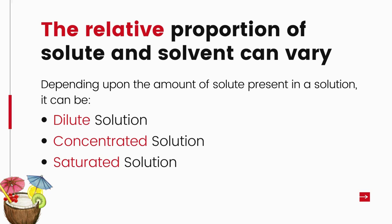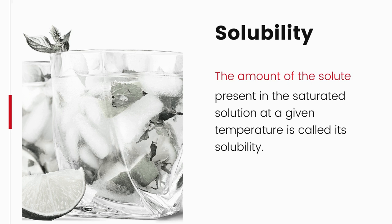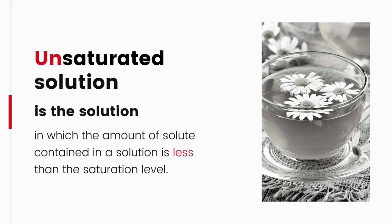The relative proportion of solute and solvent can vary. Depending on the amount of solute, a solution can be dilute, concentrated, or saturated. At a particular temperature, a solution that has dissolved as much solute as it is capable of dissolving is called a saturated solution — in other words, when no more solute can be dissolved at a given temperature, it is saturated. The amount of solute present in a saturated solution at this temperature is called its solubility. If the amount of solute is less than the saturation level, it is called an unsaturated solution.